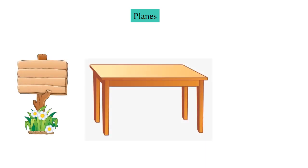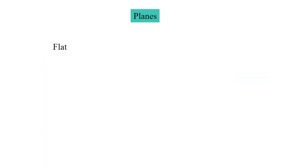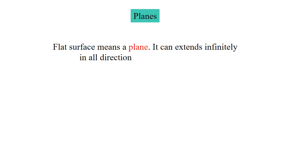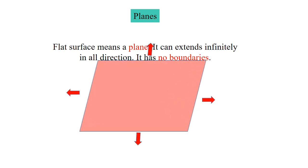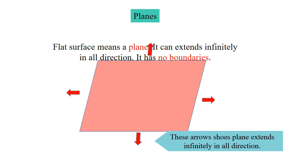The next geometric figure is plane. Look at this picture — a board and table have a flat surface. This flat surface is called a plane. Whenever we have a flat surface, that flat surface is called a plane, and it can extend infinitely in all directions — it has no boundaries. These arrows are used to show that the plane can extend infinitely in any direction.